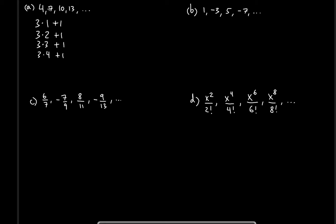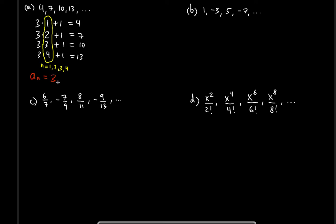We found a formula for each of these terms and there's a pattern we can use to find the nth term. Three plus one gives four, six plus one gives seven, nine plus one gives ten, and twelve plus one equals thirteen. The n values are one, two, three, and four, so now we can write the formula for the nth term, which is going to be 3n + 1.